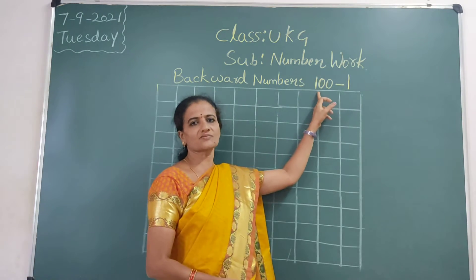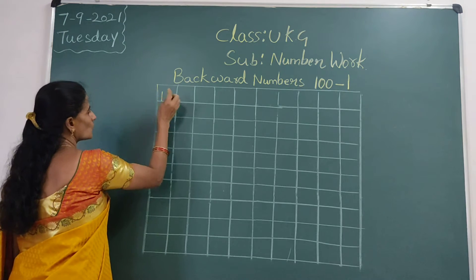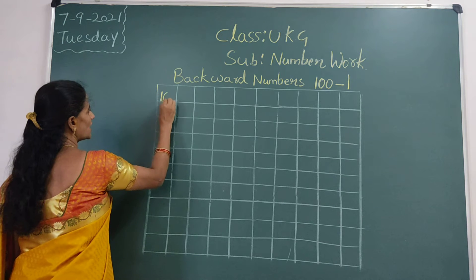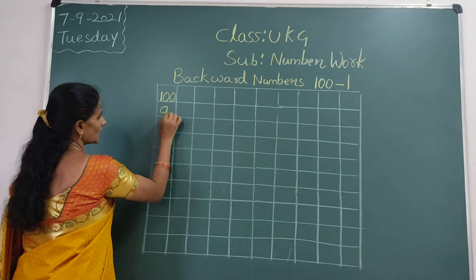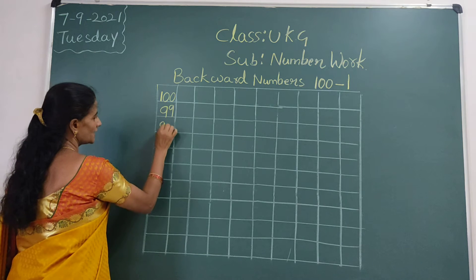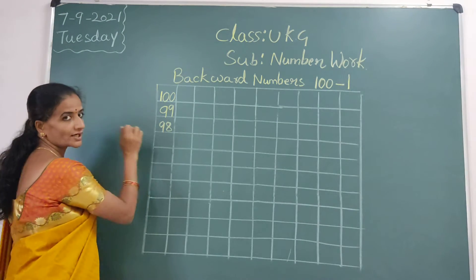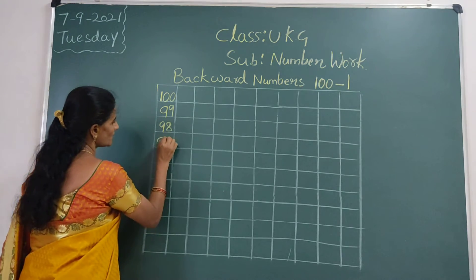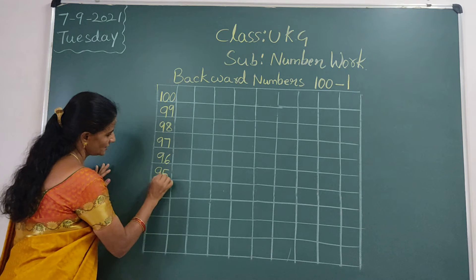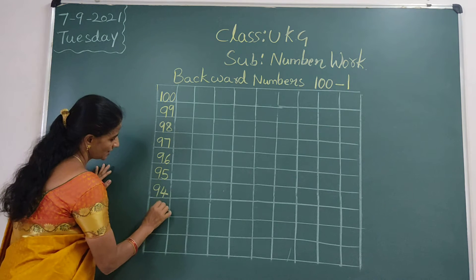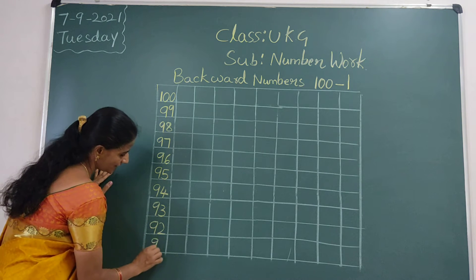We start from 100. Backward numbers, 100 to 1. So first we start: 100, 1-0-0, 100. Next: 99, 98. We should touch the square box, children. 97, 96, 95, 94, 93, 92, 91.